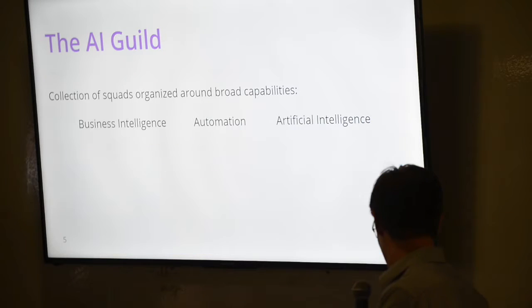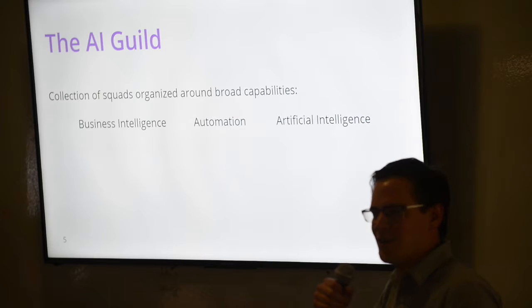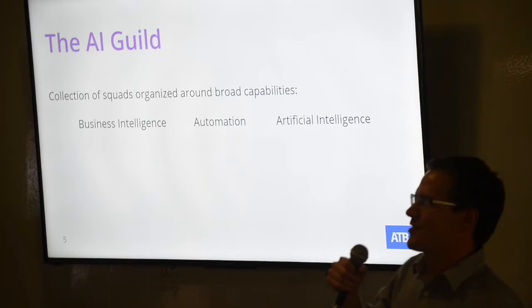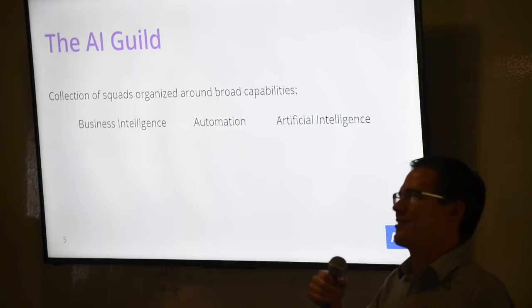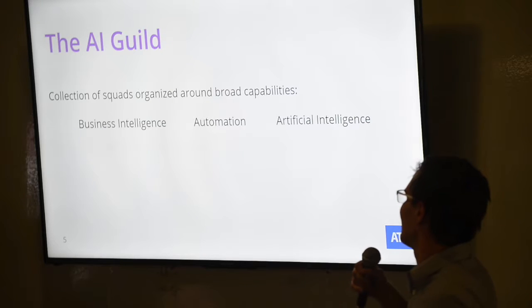So if we look at how the AI guild is structured at ATB, we're a collection of squads around a few core capabilities. The first here is business intelligence. I think it probably goes without saying why that's important to an organization like ATB. We need to understand our data. We need to make real-time insights on those.